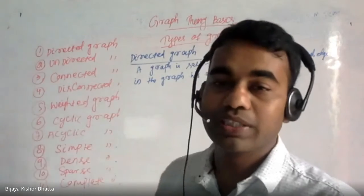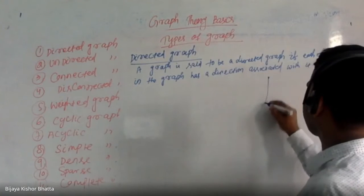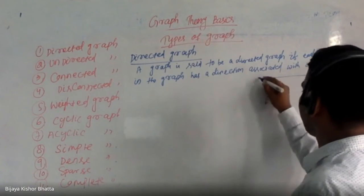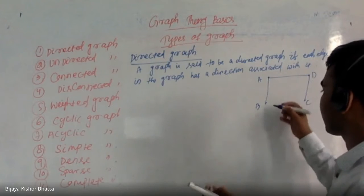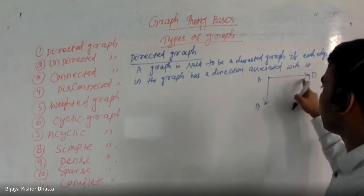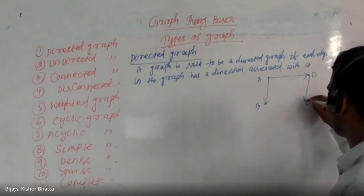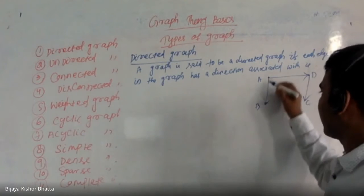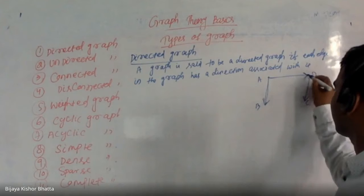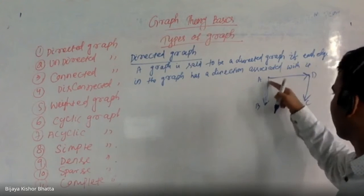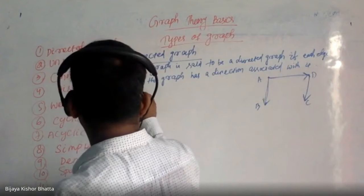Let's take an example. Suppose this is my graph with vertices A, B, C, D. Is it a directed graph? No, because there is no direction. It's also not the case that only some edges have directions — every edge must have a direction. There are three edges here. Once every edge has a direction — say A to B, A to D, D to C — then this is known as a directed graph.